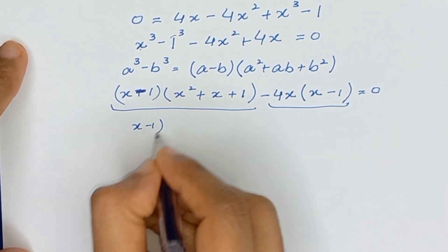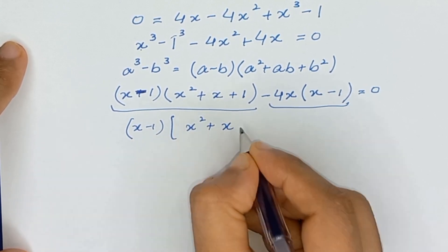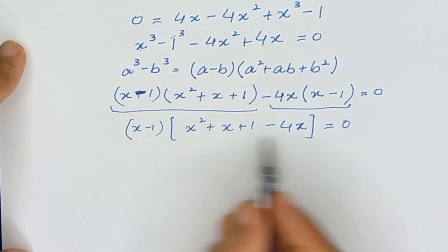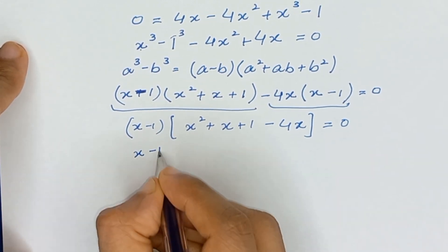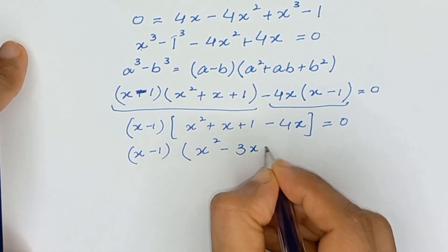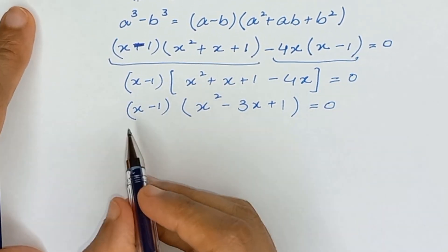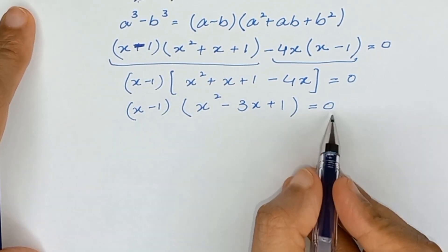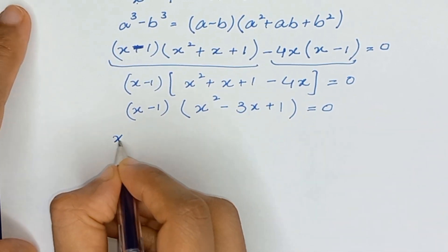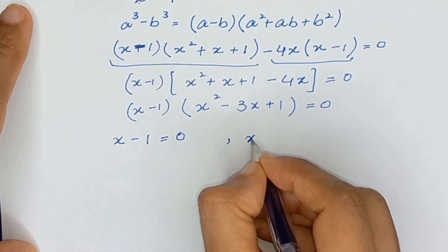Now we have x minus 1 common in both parts, so we factor it out: (x minus 1)(x squared plus x plus 1 minus 4x) equals 0, which simplifies to (x minus 1)(x squared minus 3x plus 1) equals 0. This gives either x minus 1 equals 0 or x squared minus 3x plus 1 equals 0.